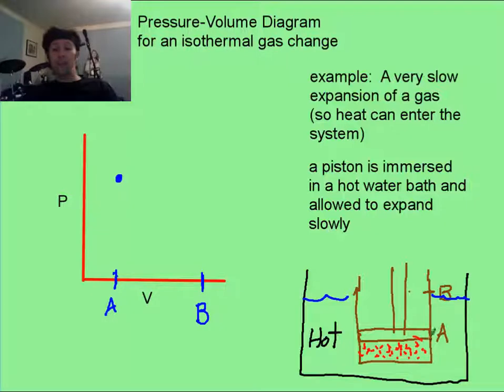And you then let it expand from a volume at A, which I made here, to a larger volume at B. But it's going to go really slowly, and so the hot tub is always going to be putting some energy. A gas will try to cool as it expands, but if you slowly do it so that the heat from the hot tub can enter it, then that temperature will remain constant.